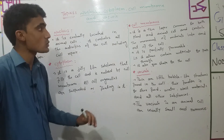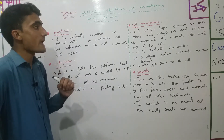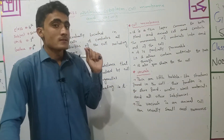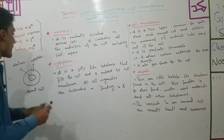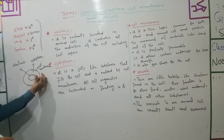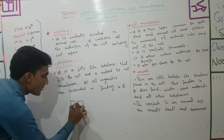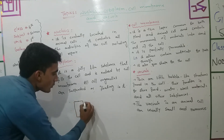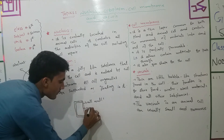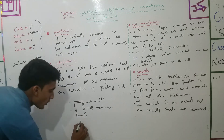The next organelle is the Cell Membrane. It is a thin layer common to both plant and animal cells. In animal cells, the cell membrane is the outer layer. In plant cells, the outer layer is the cell wall, and the cell membrane is found just inside the cell wall. The cell membrane is present in both plant and animal cells.